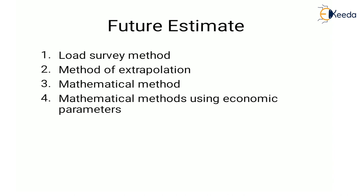The last method is mathematical methods using economic parameters. These methods are based on the assumption that per capita consumption of electrical energy in a country depends upon economic factors, some of these being specific gross investment, industrial production, specific GNP, steel consumption, housing, transport, etc. Indices of these parameters are found and suitably used for extrapolation by linear or exponential approximations.